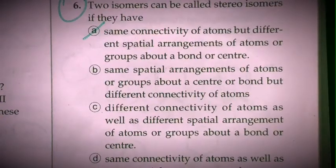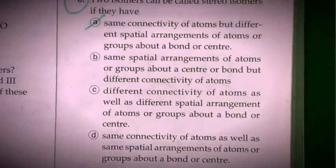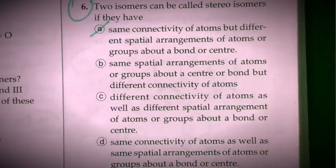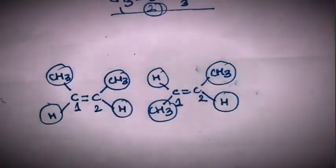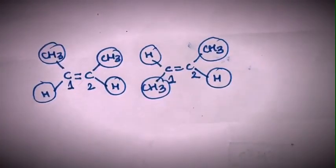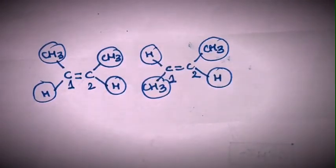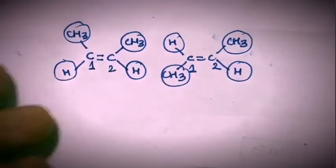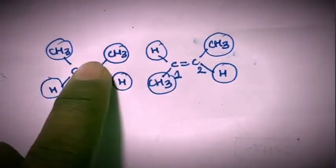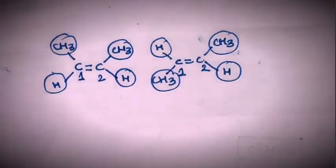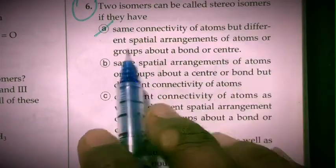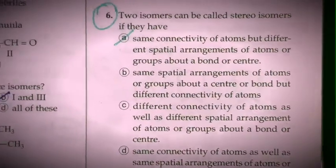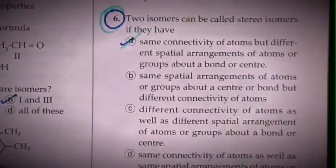Coming to the sixth problem: two isomers can be called stereoisomers if they have... Stereoisomers must have the same molecular formula as well as the same connectivity. The connectivity is the same but the spatial arrangement of the groups is different. Here both methyl groups are on the same side, and in the other molecule they are on different sides. So the correct answer is the first option: same connectivity of atoms but different spatial arrangement of atoms or groups about a bond or a center.